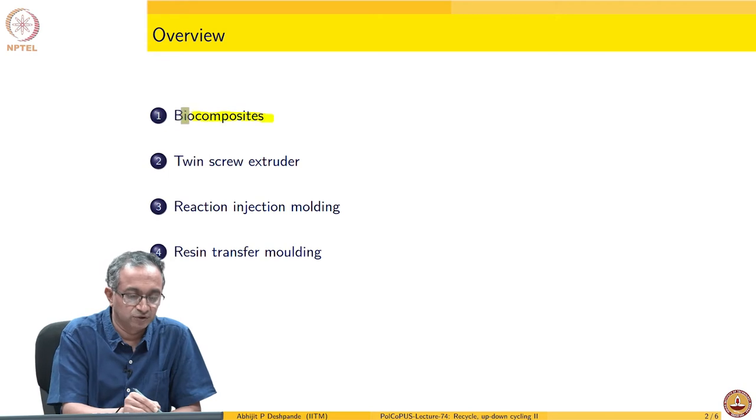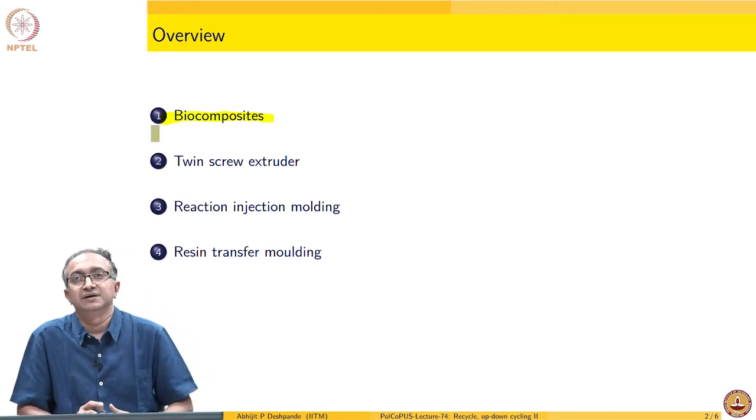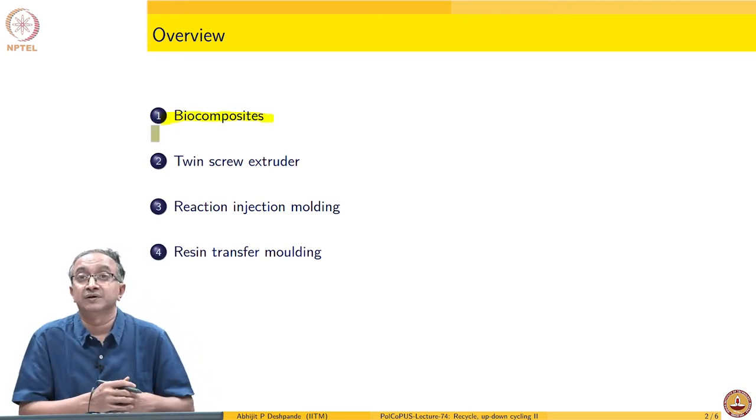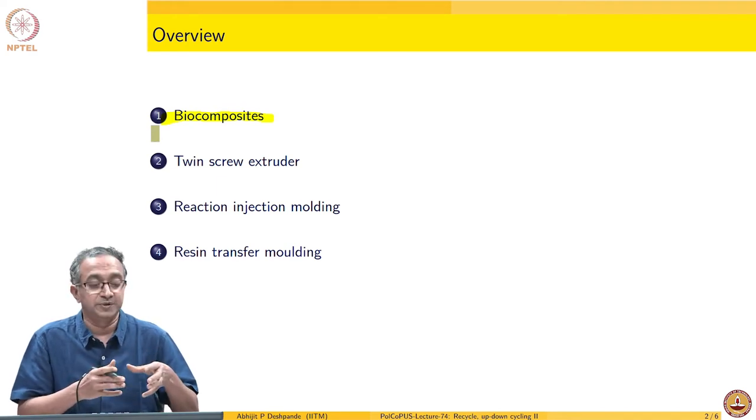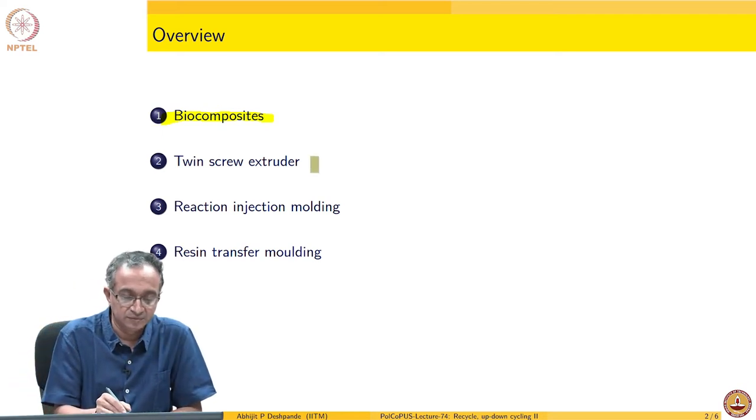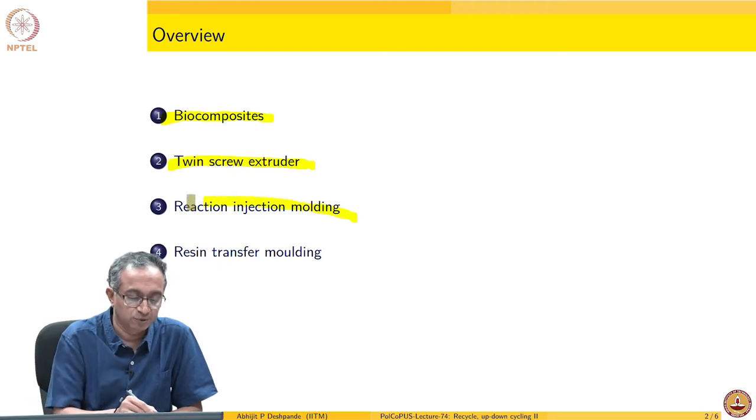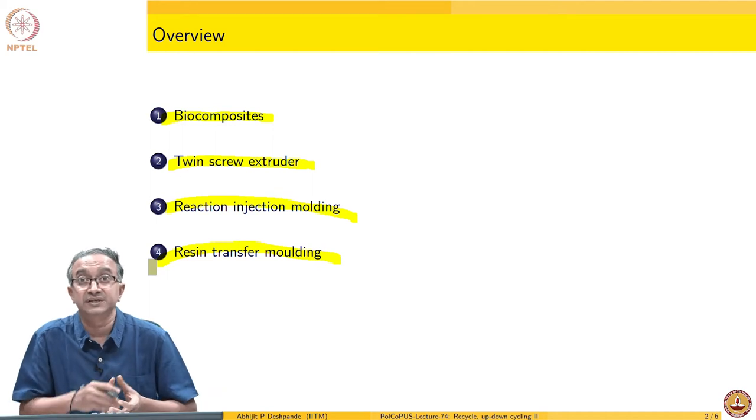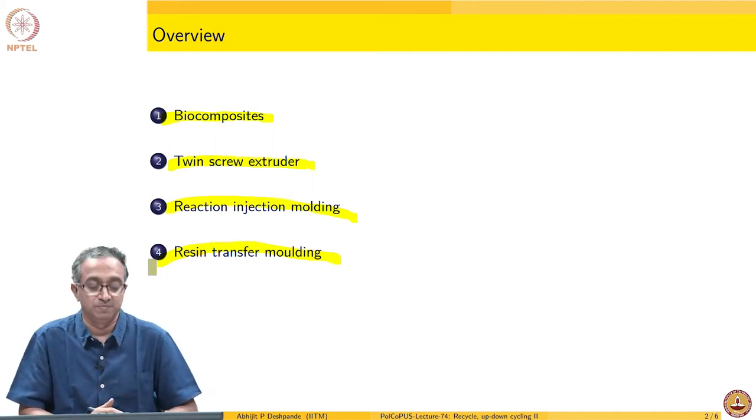We will look at biocomposites as a possibility, where some part of the recycled material incorporates renewable sources based polymers. And then more importantly, can we effectively exploit the techniques which are available for polymer processing in these context of biocomposites.